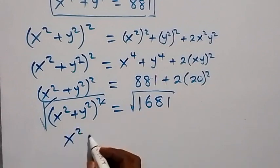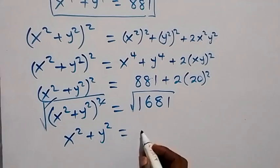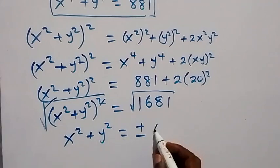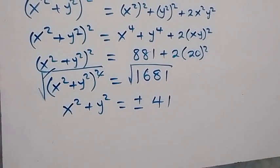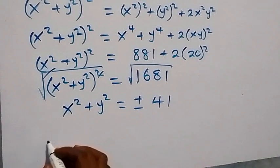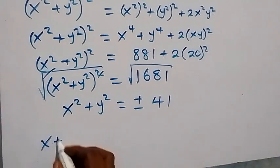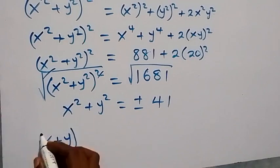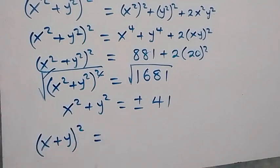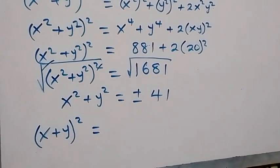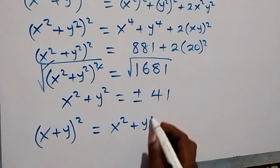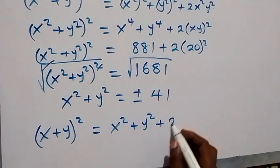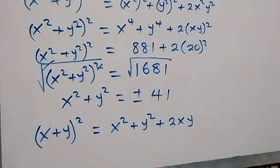Taking the square root of both sides, the square root cancels and we are left with x squared plus y squared equals plus or minus 41. Now to get x plus y, we expand from the identity: x plus y all squared gives us x squared plus y squared plus 2xy.